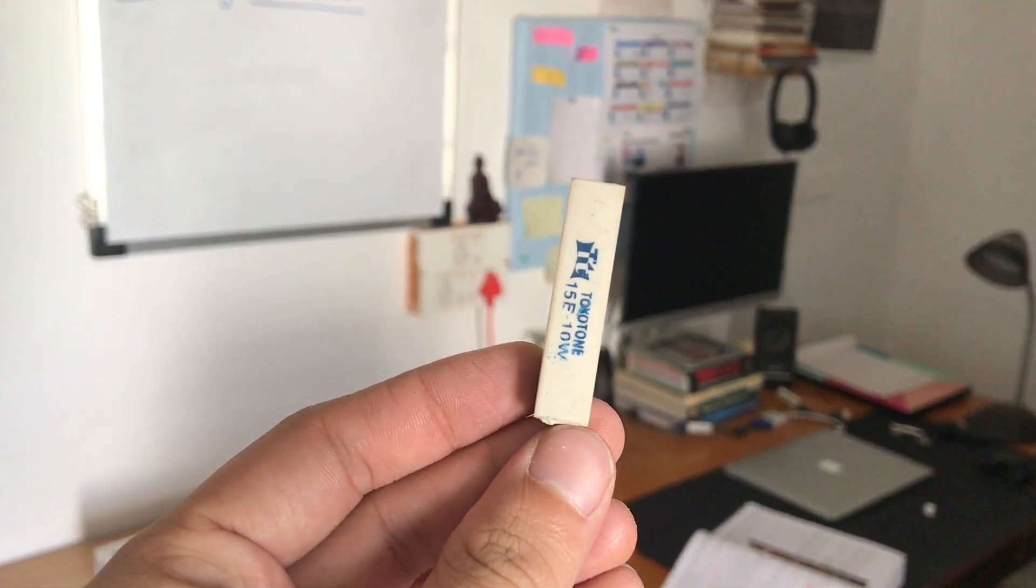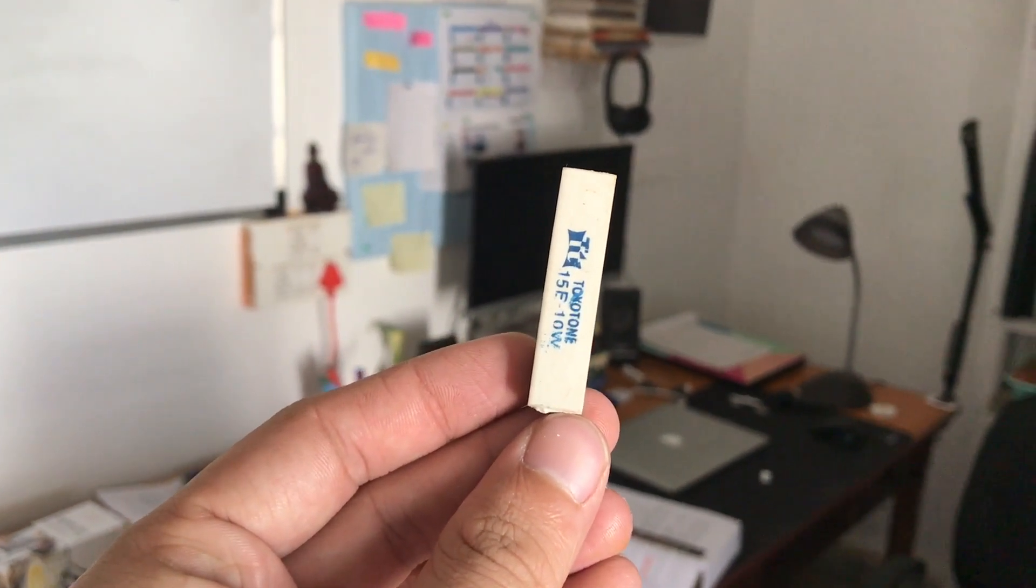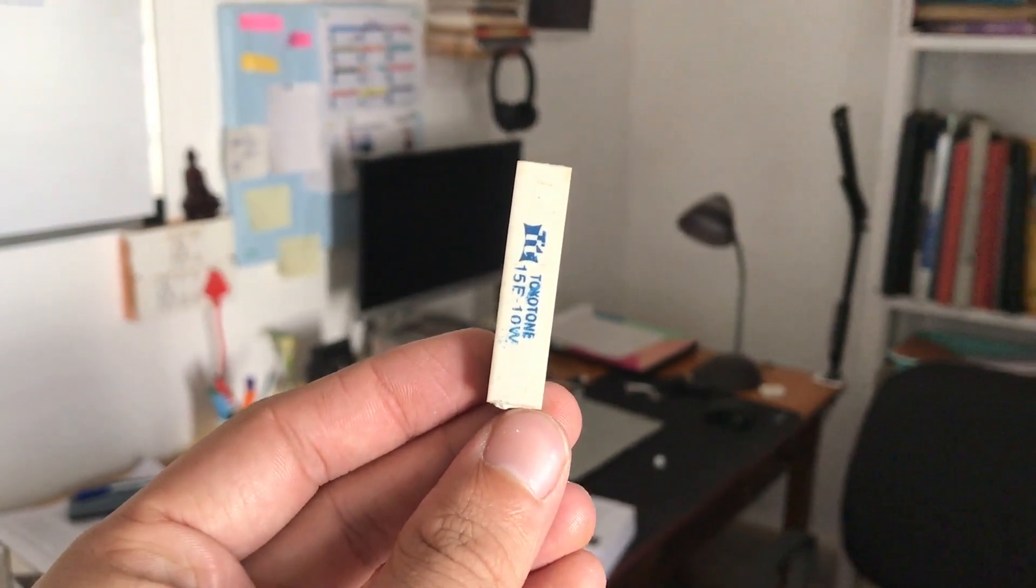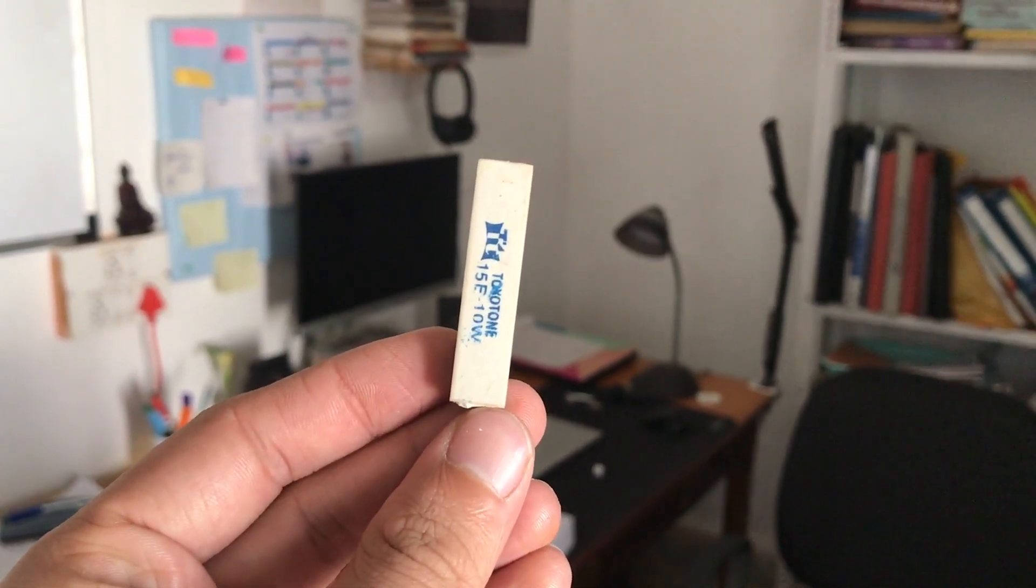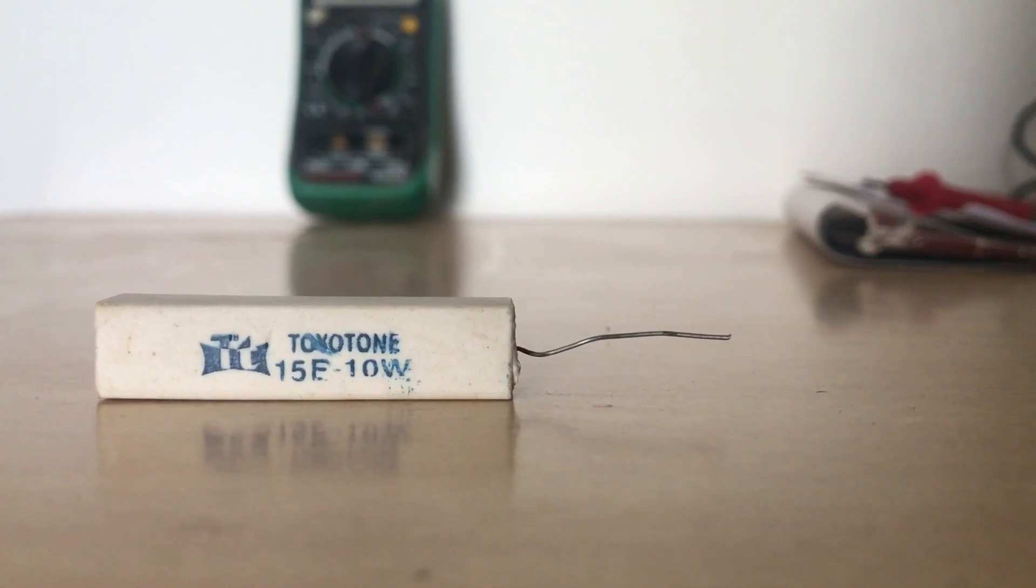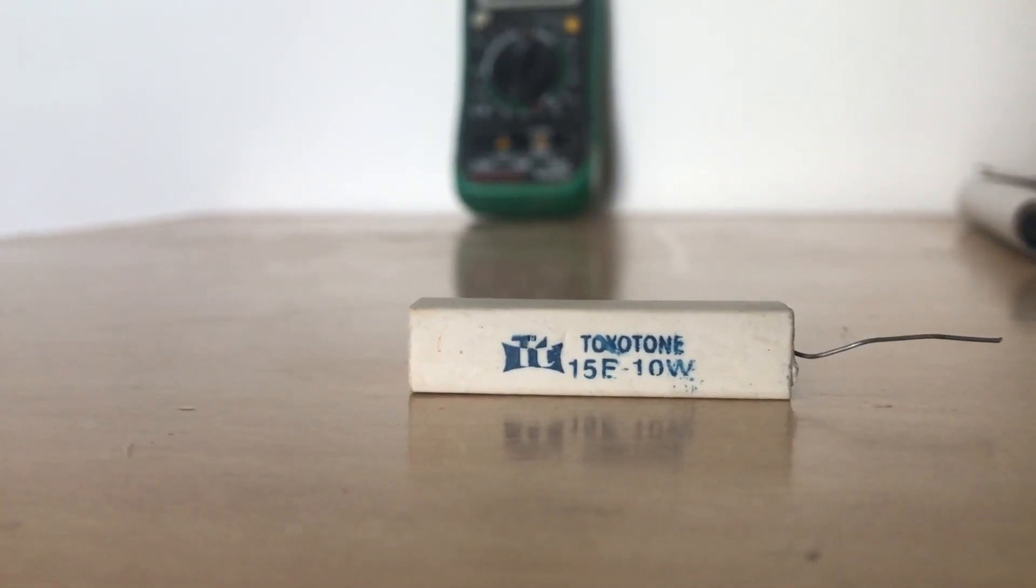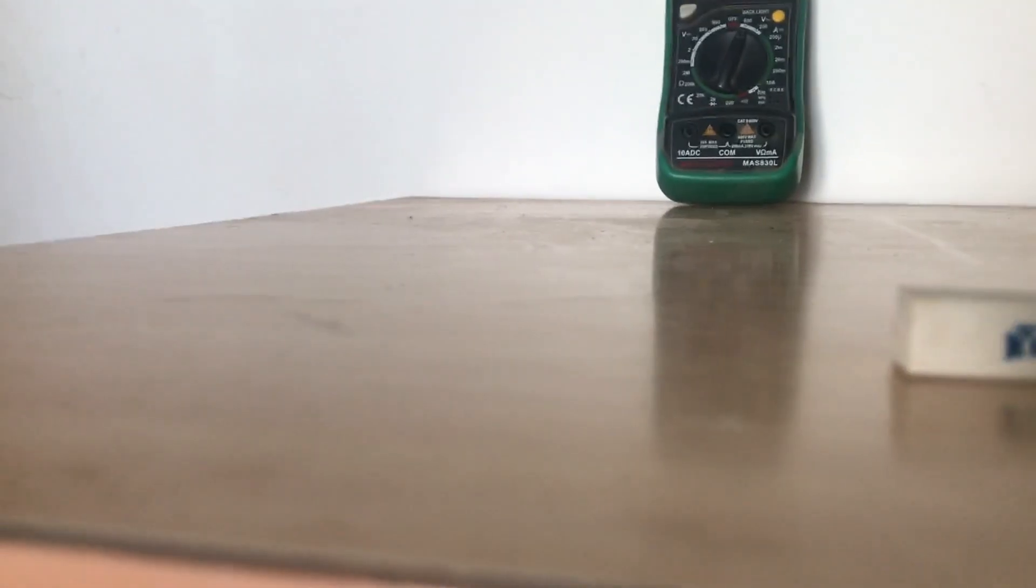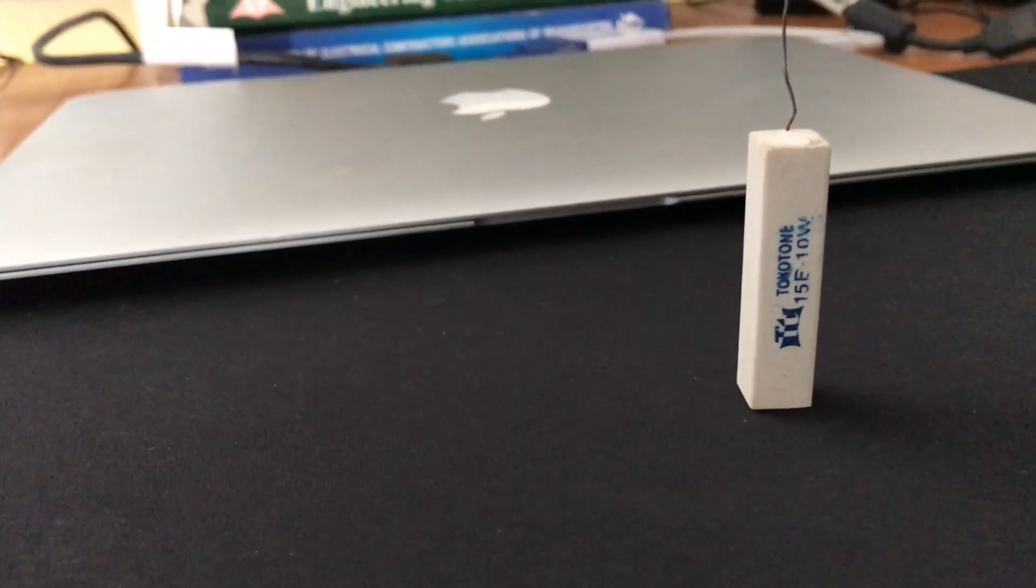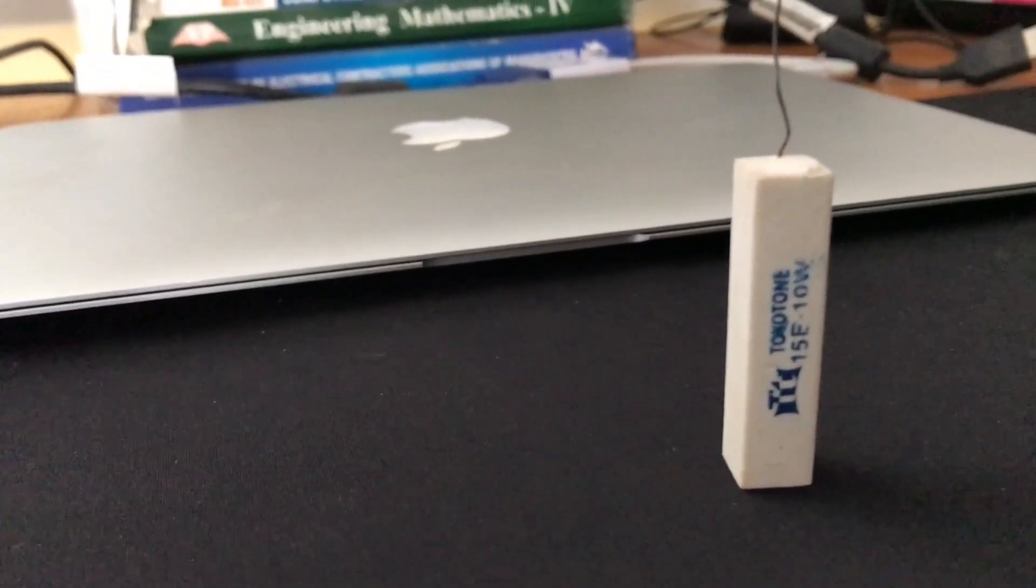There are resistors available which are designed to withstand and dissipate large amounts of power. We call such kind of resistor as power resistors. Generally such kind of resistors are made up from materials with high thermal withstand capacity. Resistance value of such resistors are generally small. This is also a power resistor of 10 watts made up of ceramic.